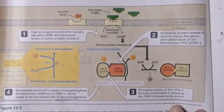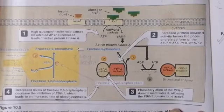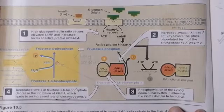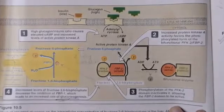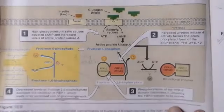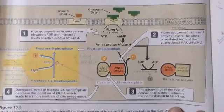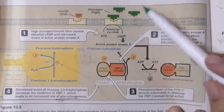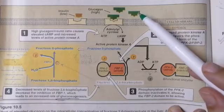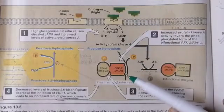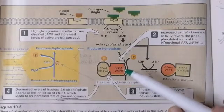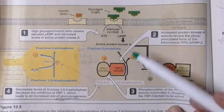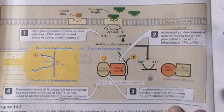Welcome to my channel. In this video we're going to discuss the effect of glucagon and insulin. In this diagram you can see there is an increased amount of glucagon and a low amount of insulin. We're going to discuss the increased amount of glucagon's effect on the phosphofructokinase enzyme and also the effect on fructose 2,6-bisphosphatase.